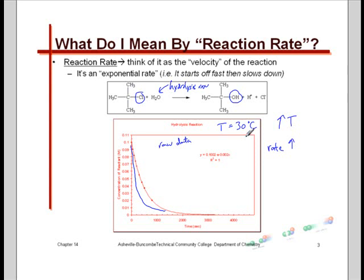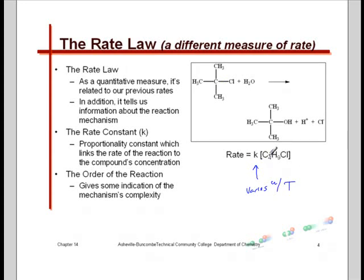Previously in all the other talks, that's why we emphasized temperature being held constant — because in this section of the book, we learn that K starts to vary with temperature. That's important because we can actually start gaining more information about the mechanism and the complexity of the reaction. We're really going to start understanding how the molecules are colliding and what's controlling the reaction on a molecular level.